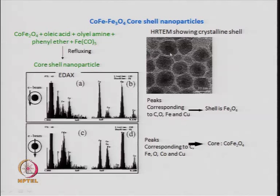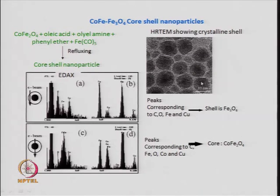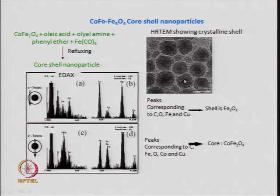From the TEM image, the scale bar shows 10 nanometers. The total core-shell particle diameter is around 10 nm; looking carefully, the core diameter is around 4 to 5 nanometers and the shell thickness is around 2 to 3 nanometers.